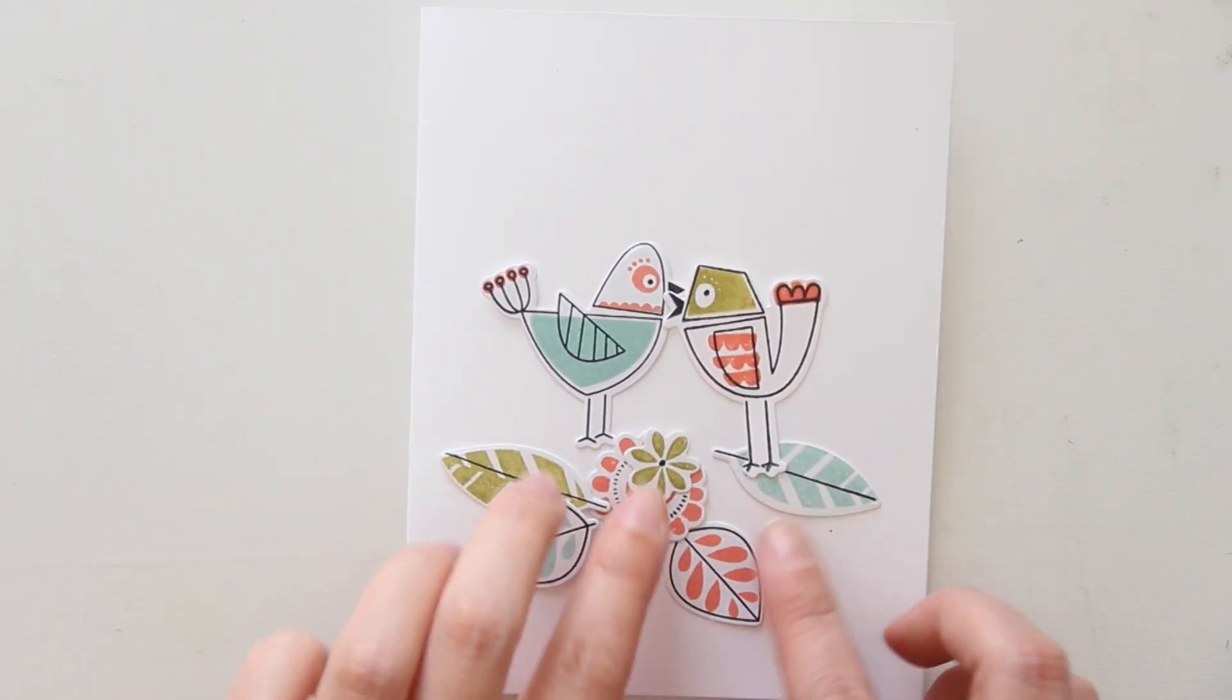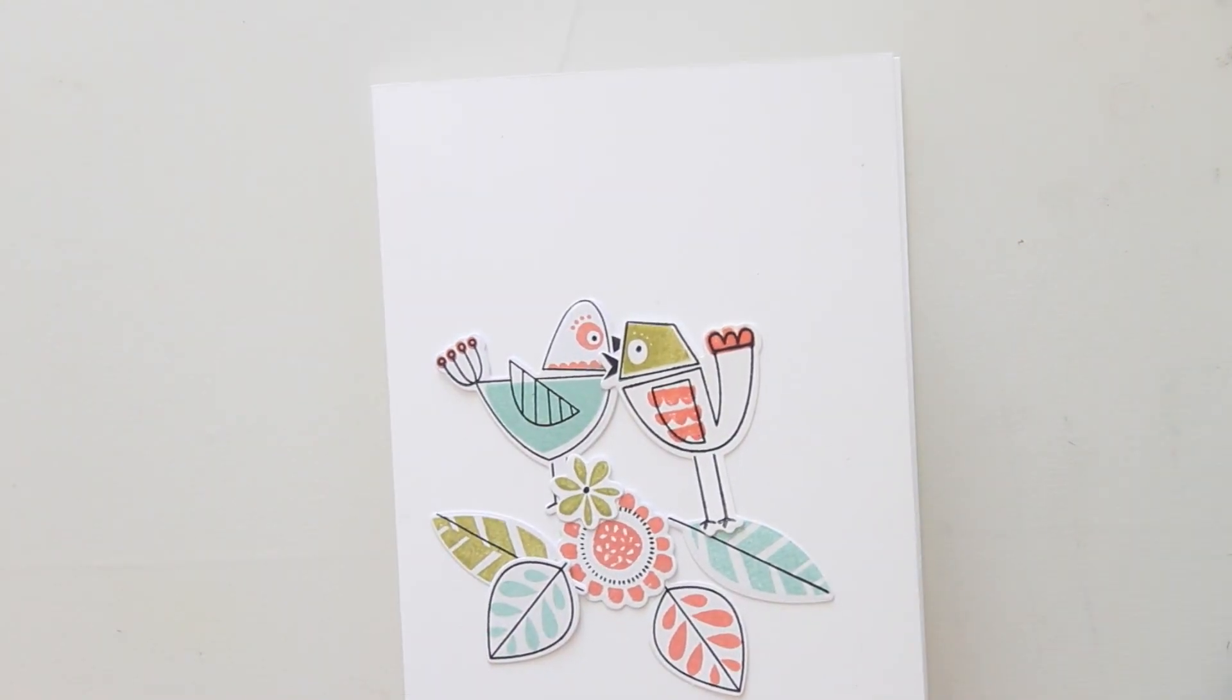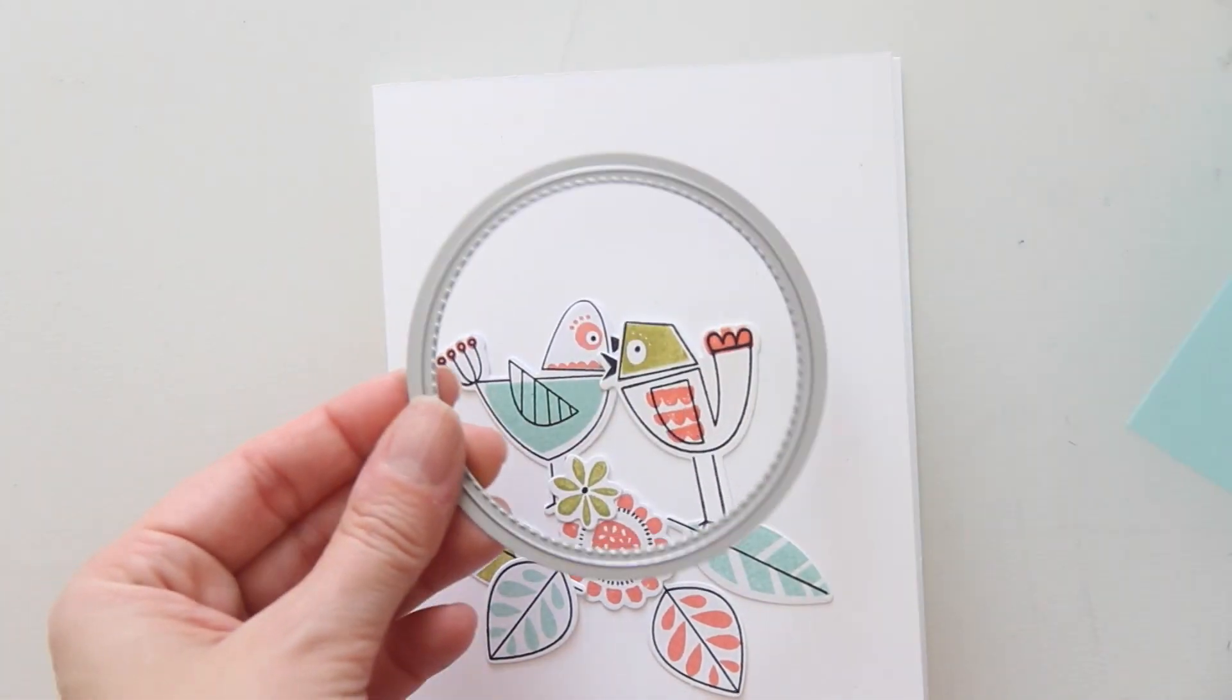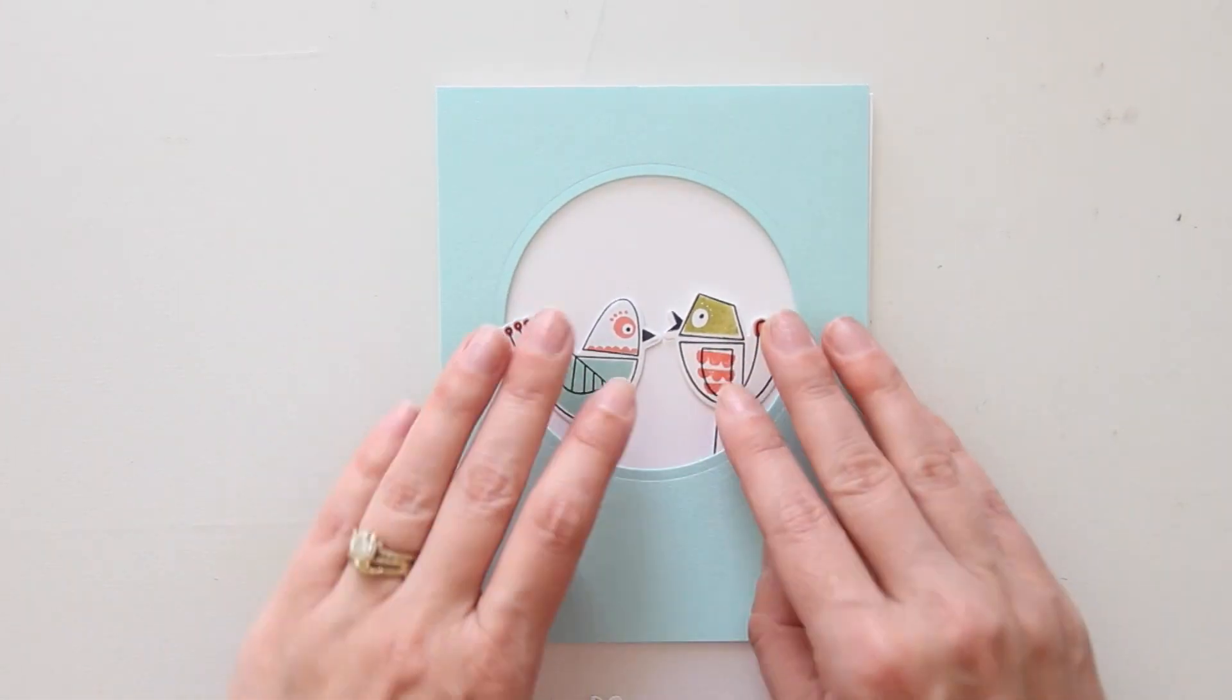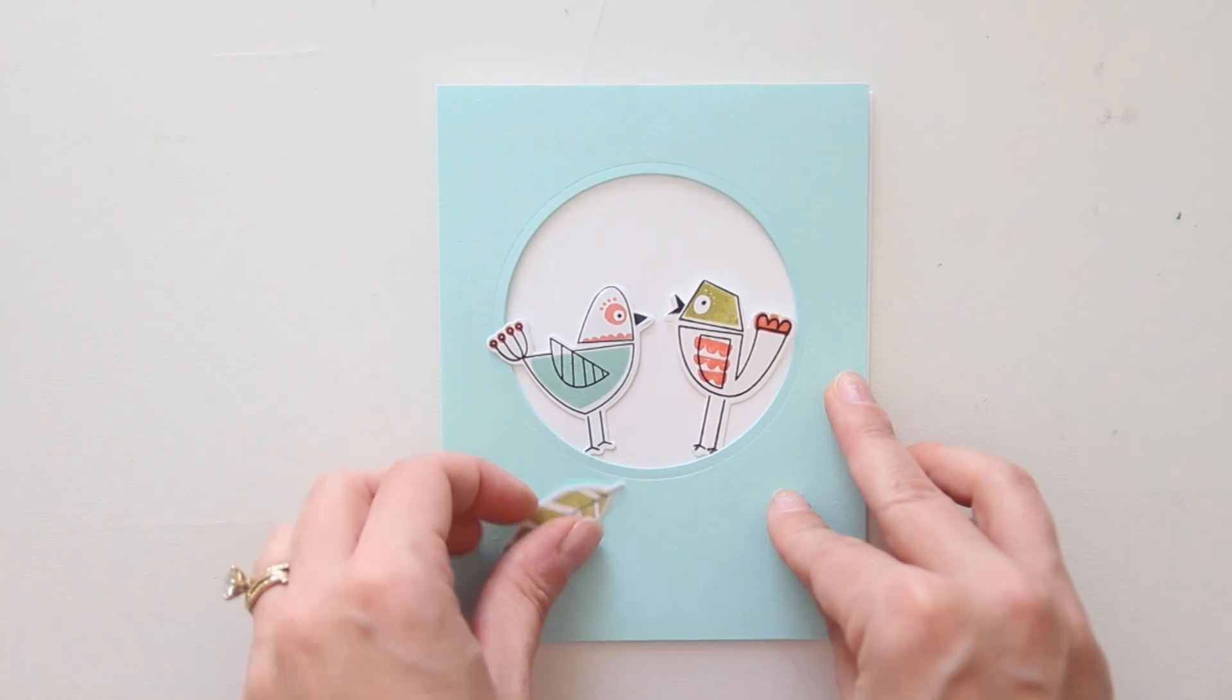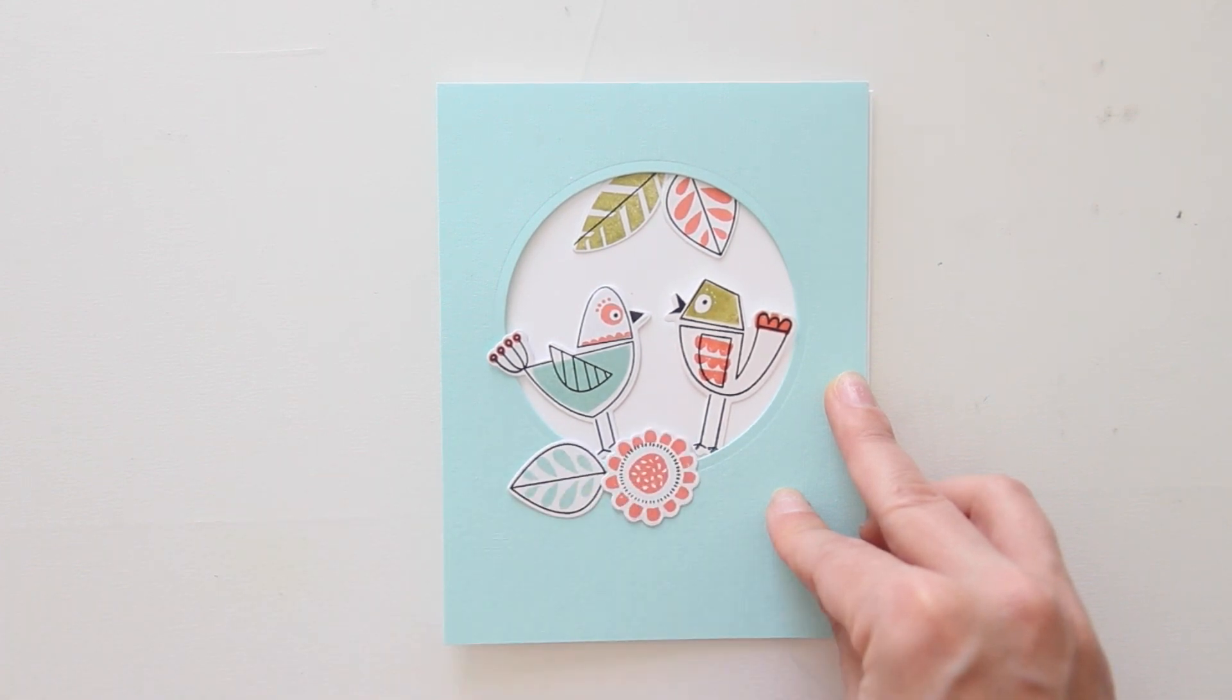Now that I have all of my pieces stamped and die cut, I'm just sort of thinking about how they're going to be arranged on the card. I decided I wanted to die cut a circle out of a piece of blue cardstock, and that that was going to be the front of my card, and that I would have my die cut elements kind of peeking out from underneath it, and then some layered on top. Here you can see I'm just kind of working out which pieces I want layered underneath, and which pieces I want on top.